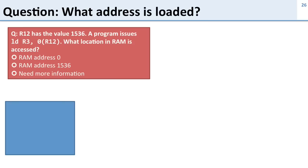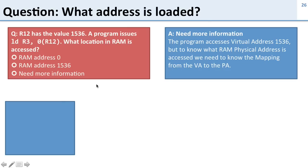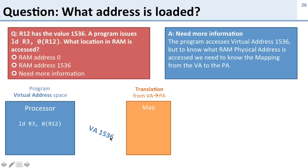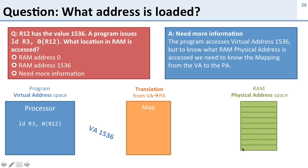Here's a question: register R12 has the value 1536, and the program issues this load. What location in RAM is going to be accessed? Well, we need more information. The program is accessing virtual address 1536, but we don't know what physical address that maps to. Here's our processor in the program's virtual address space — this load generates virtual address 1536, but we need the map to tell us the physical address. Without knowing the mapping, we have no idea what location in RAM will actually be accessed.